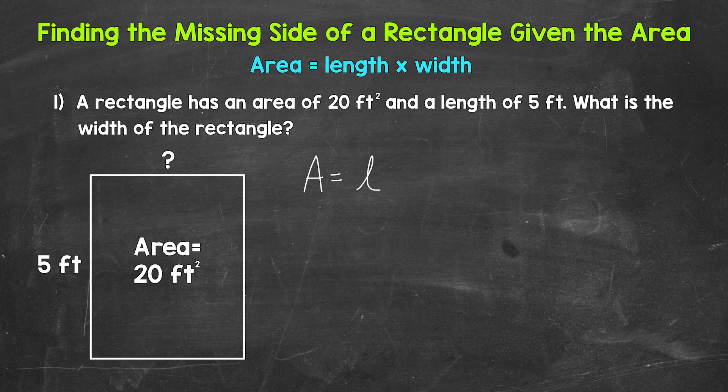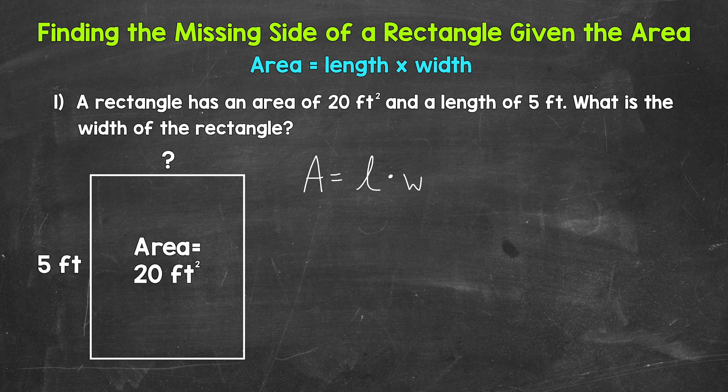Area equals length times width. I'm using a cursive L just so we don't confuse that L with a one — use what works best for you, just make sure you know it's an L. And I'm using a dot for the multiplication sign instead of an X, because we're going to be using algebra in this video. X is a very common variable in algebra, so we don't want our multiplication sign mistaken for a variable. This is just a different way of writing out multiplication — we're not changing anything. Now we plug in what we are given.